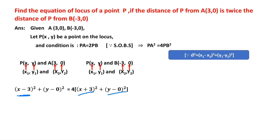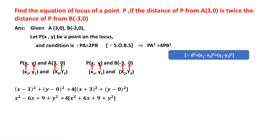Now expand (x - 3)² using (a - b)² = a² - 2ab + b²: that gives x² - 6x + 9 + y² = 4 times (x + 3)² expanded using (a + b)²: x² + 6x + 9 + y². Multiplying the right side by 4 gives 4x² + 24x + 36 + 4y².